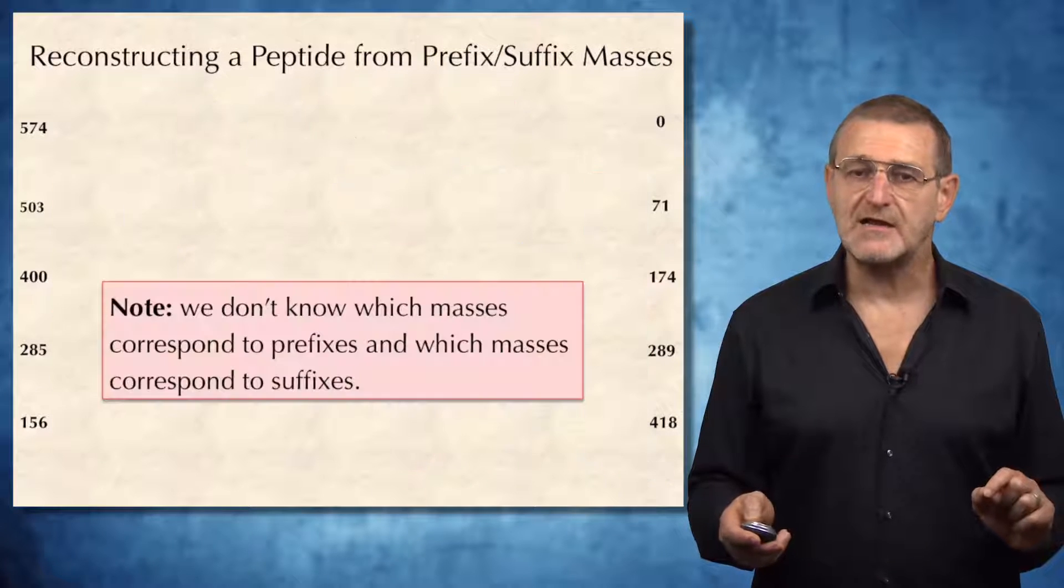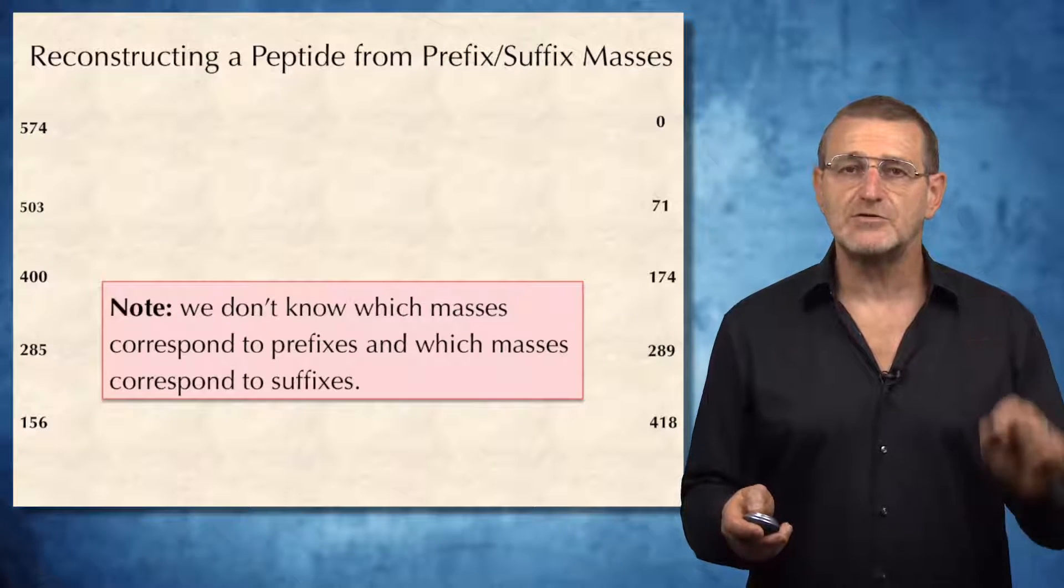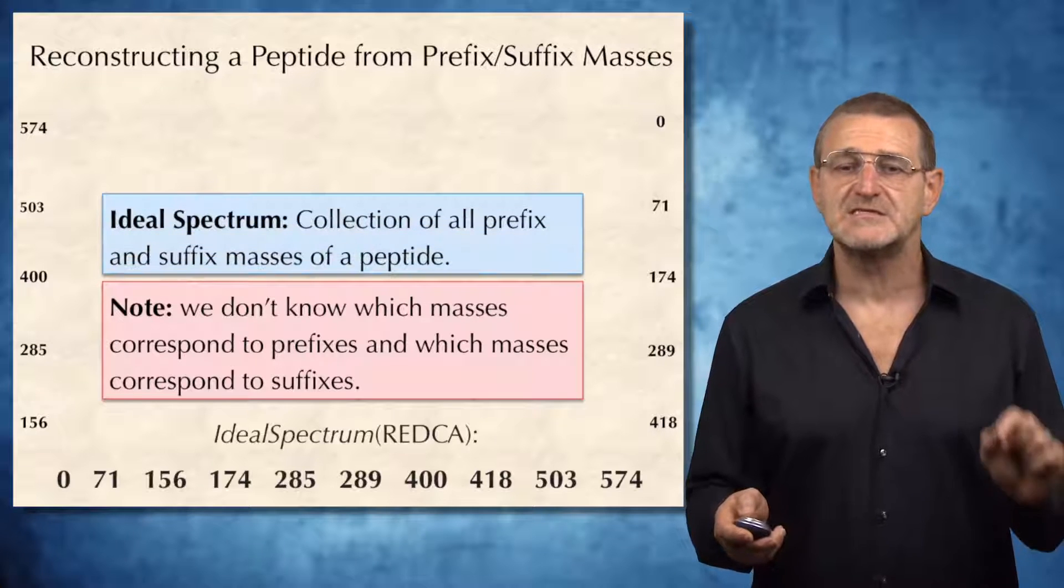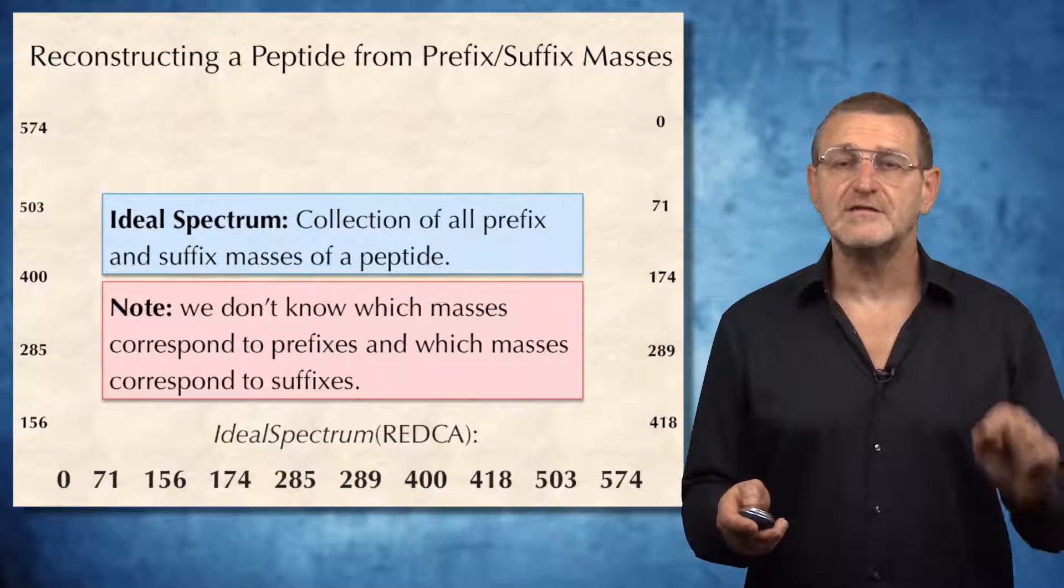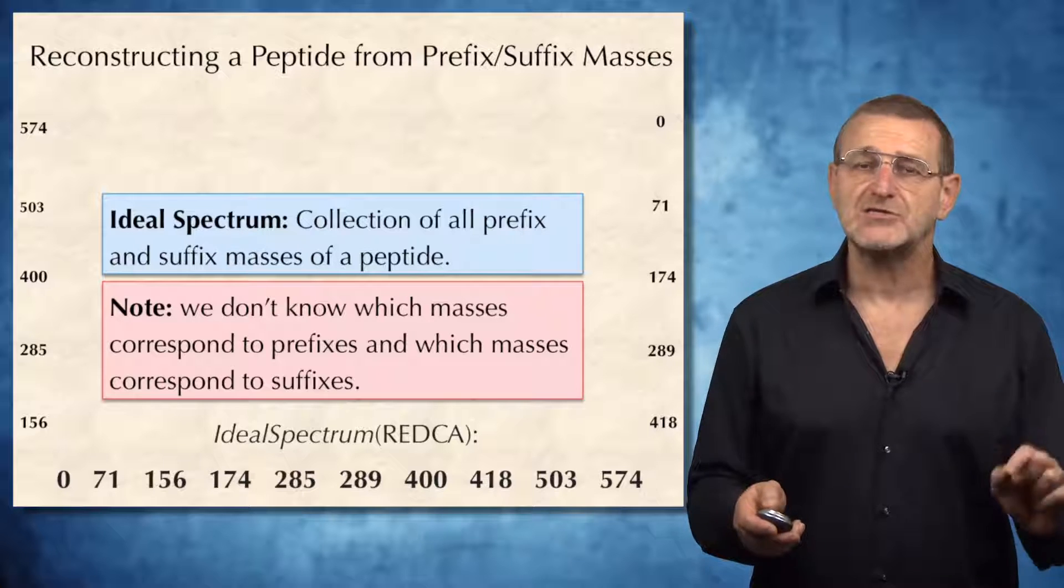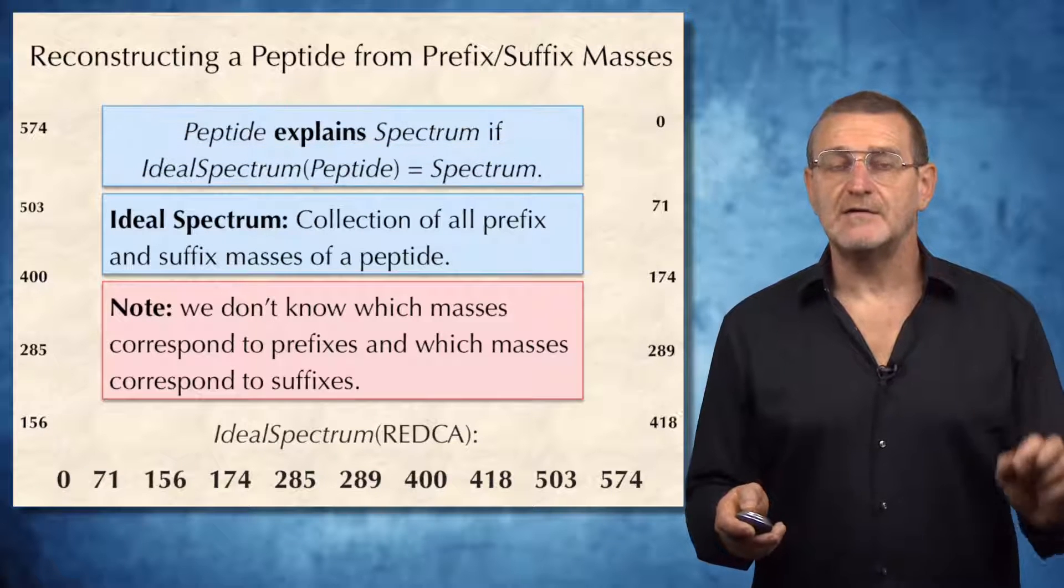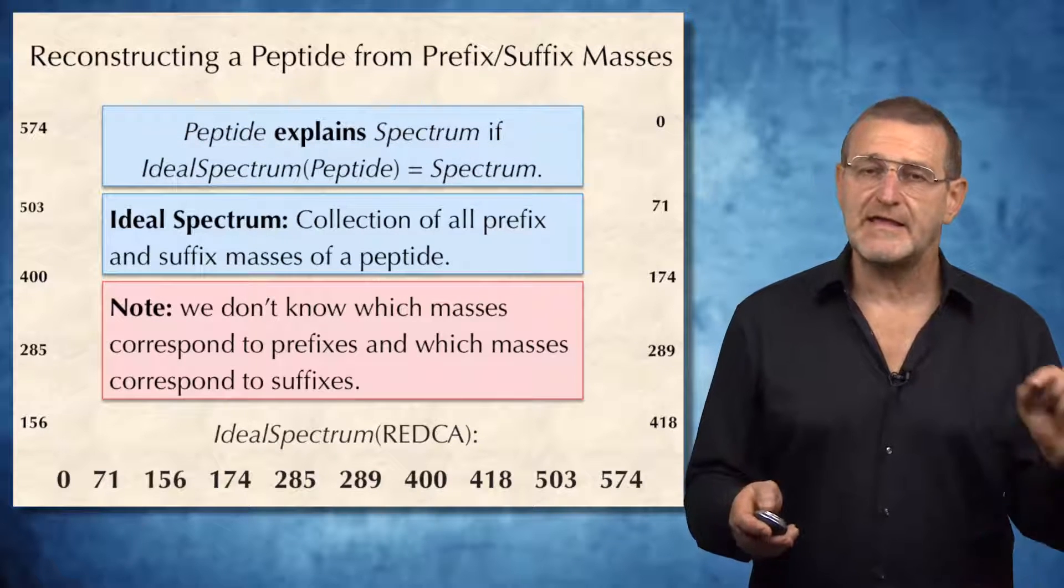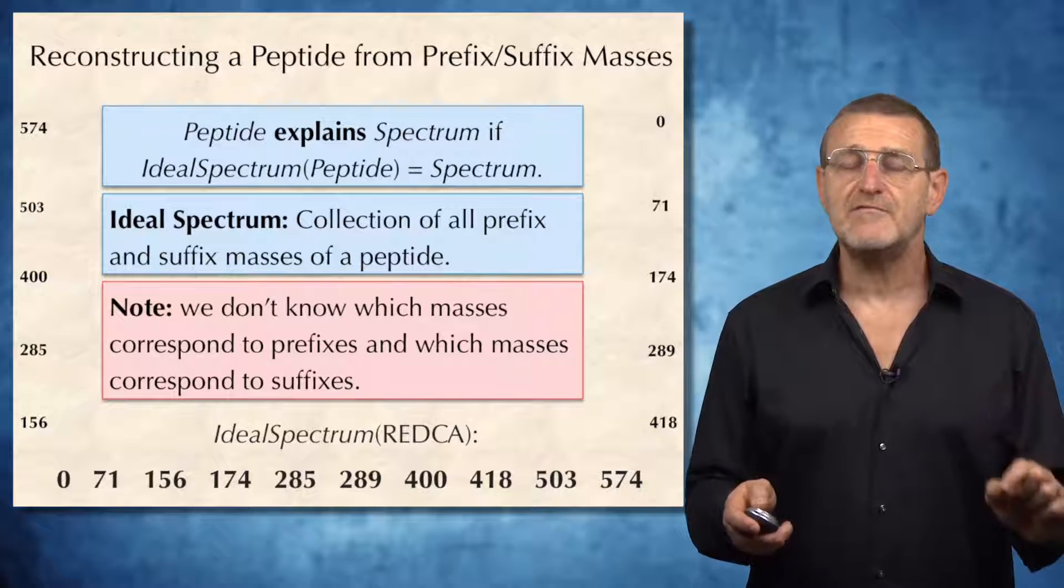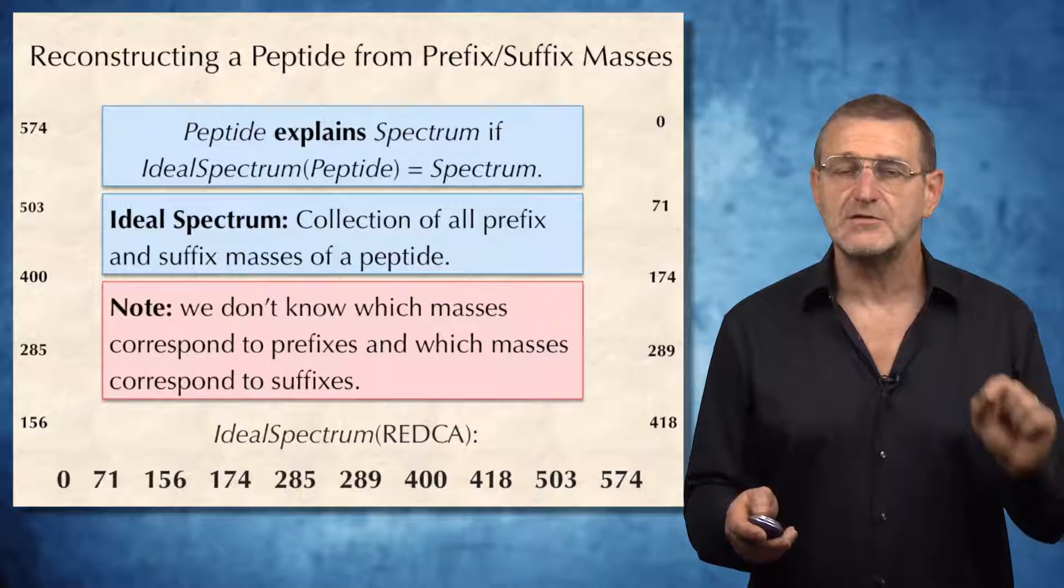Well, important thing to realize is that we don't know which masses correspond to prefix fragments and which masses correspond to suffix fragments. And therefore, what we are given is the ideal spectrum of peptide, which is simply a collection of both prefix and suffix masses. And we will say that a given peptide explains a spectrum if ideal spectrum of this peptide equals spectrum.